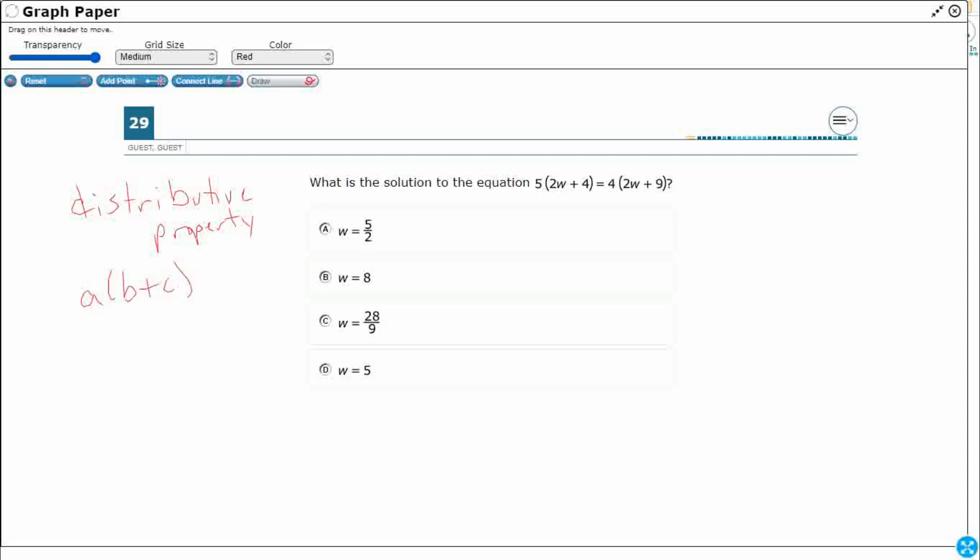So here's the distributive property in a nutshell. If you take a quantity A, multiply it by an expression B plus C, what you can do is take that outside quantity and multiply it by each of the terms on the inside. Right, take that A, distribute it to the B, distribute it to the C, keep watch over the operation because you're going to have to keep that the same. But that's it in a nutshell.